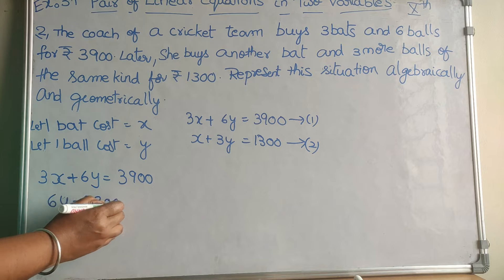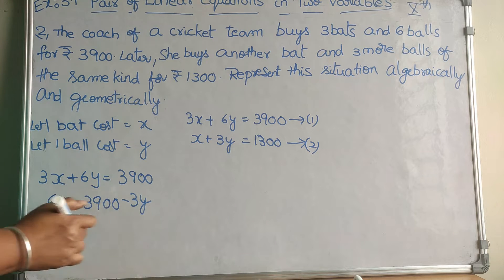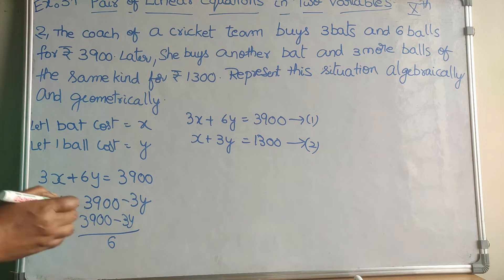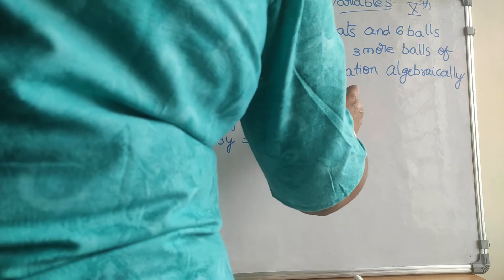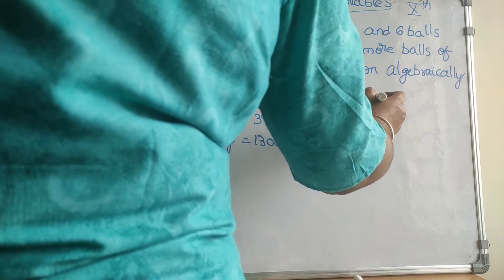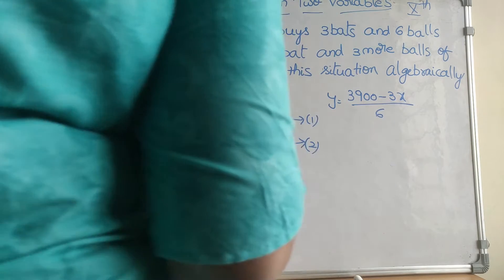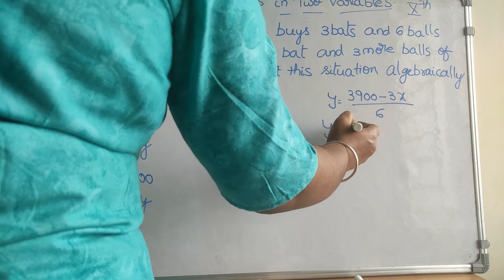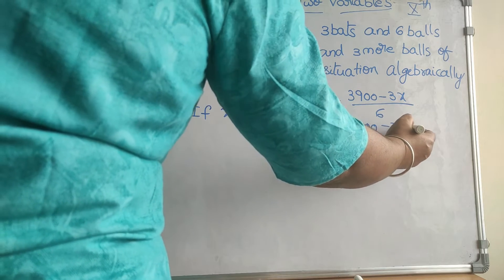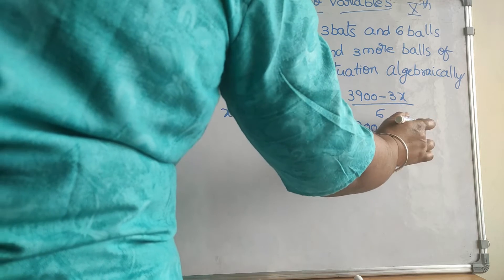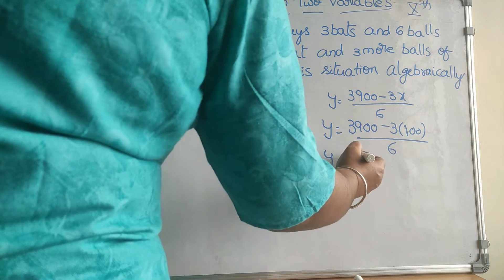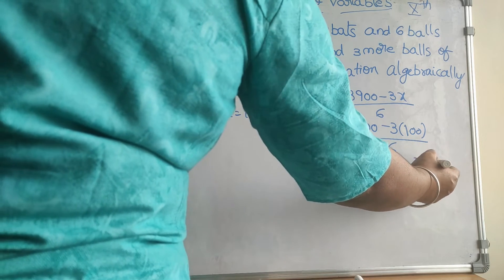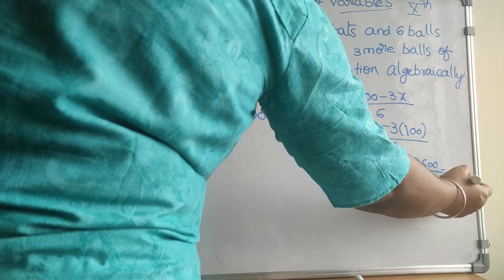From the first equation, 3x + 6y = 3900, we get 6y = 3900 − 3x, so y = (3900 − 3x) / 6. If x = 100, then y = (3900 − 300) / 6 = 3600 / 6 = 600. So when x is 100, y is 600.